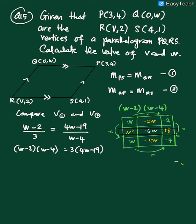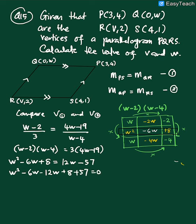So that's why we can have answer for this one is W square minus 6W plus 8 equal 12W minus 57. Okay, and then we have W square.